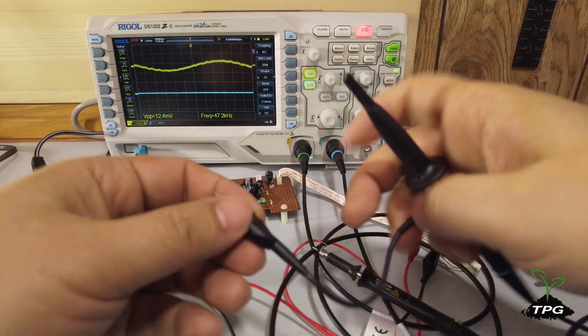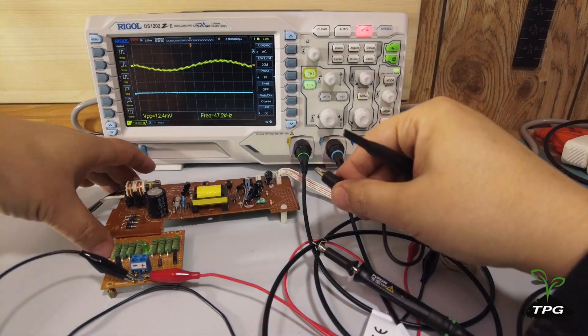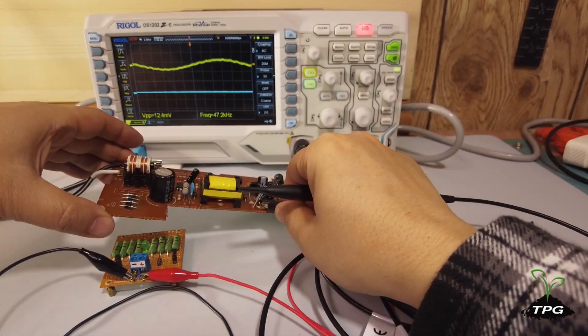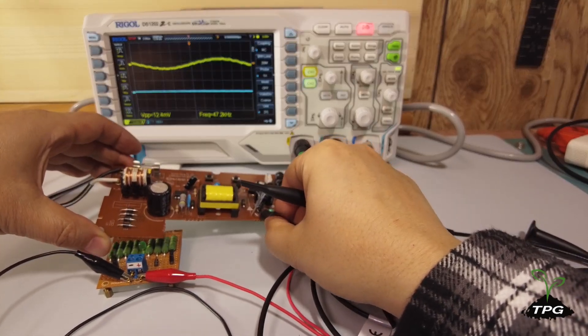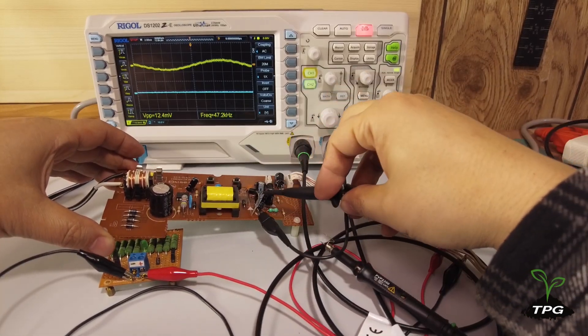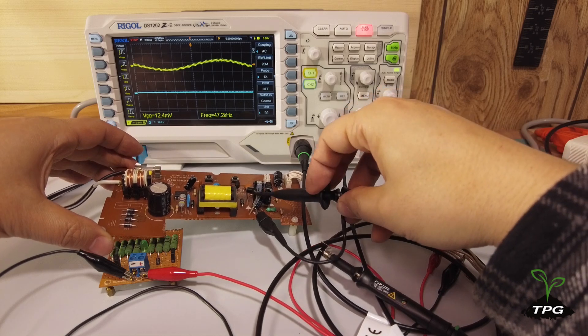The second probe is connected to the secondary side of the transformer to catch the SMPS switching waveform, providing a reference for this measurement.